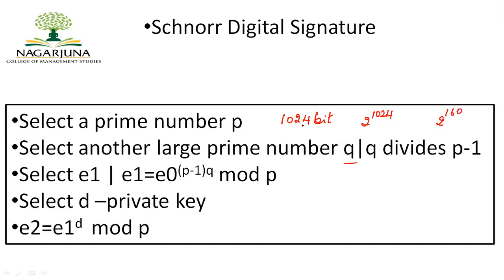So p should be 1024 bits and q should be around 160 bits. Next, you have to calculate a public key e1, which is calculated as e1 = e0^((p−1)/q) mod p, where e0 is a primitive value of p.